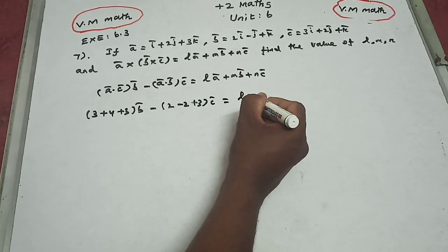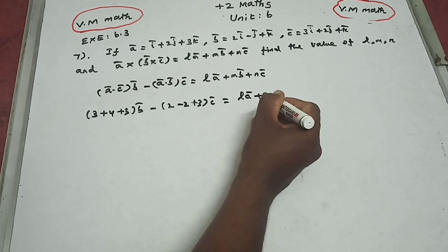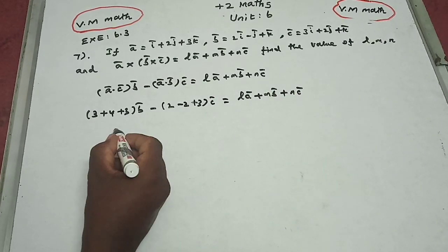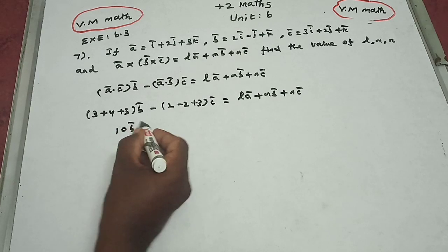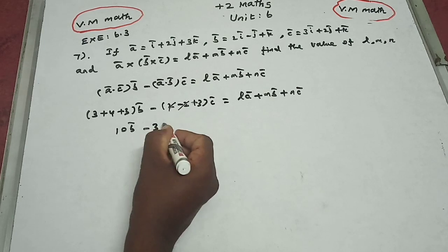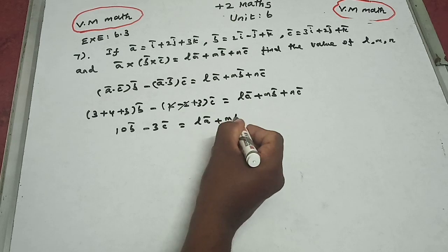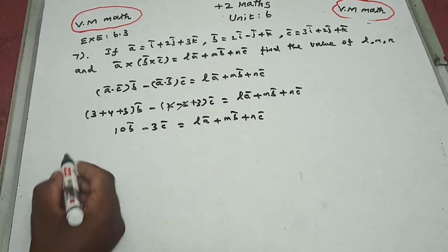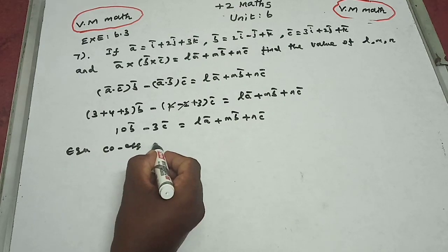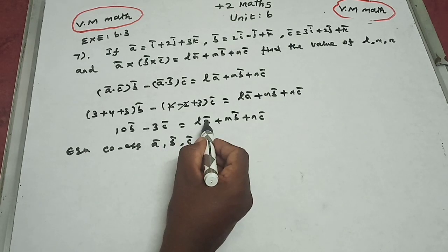So left-hand side equals right-hand side: la + mb + nc. Here it is 10b vector minus 3c vector. Equating coefficients of a vector, b vector, and c vector: l = 0, m = 10, n = -3.